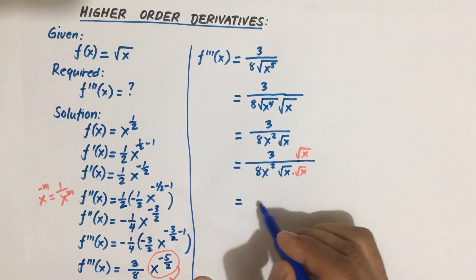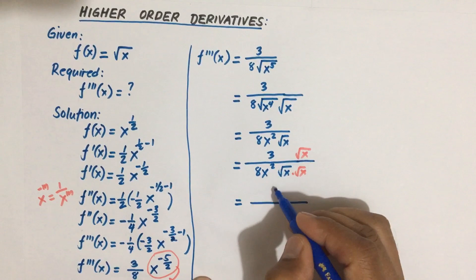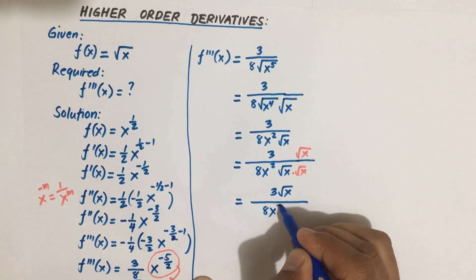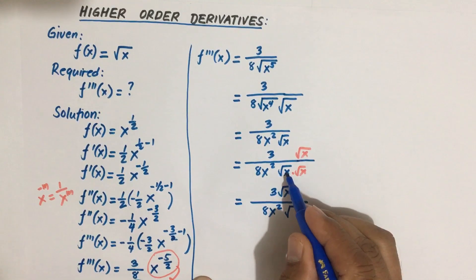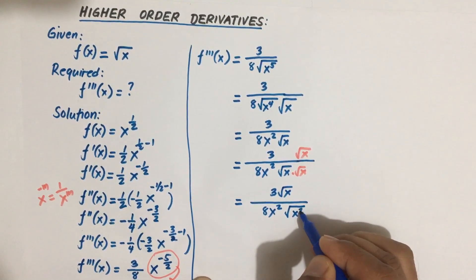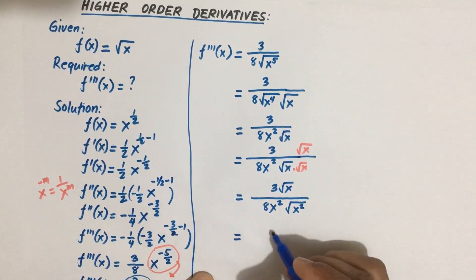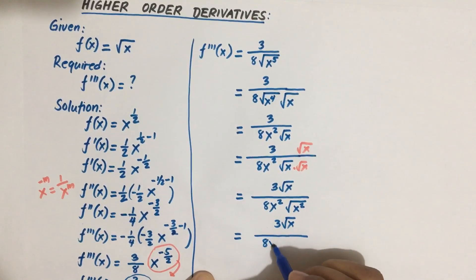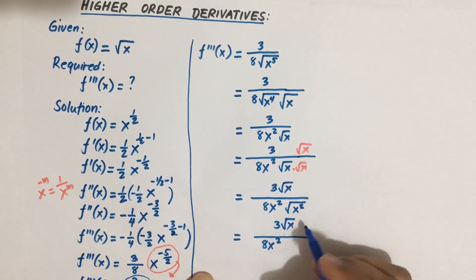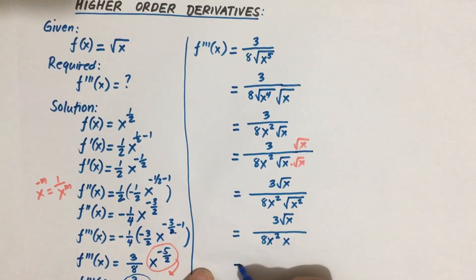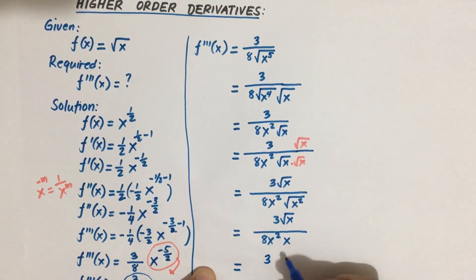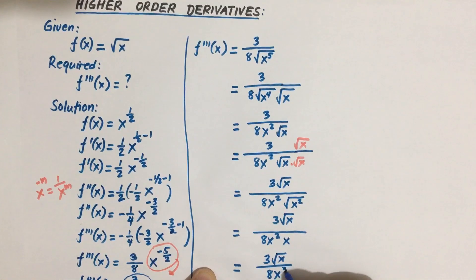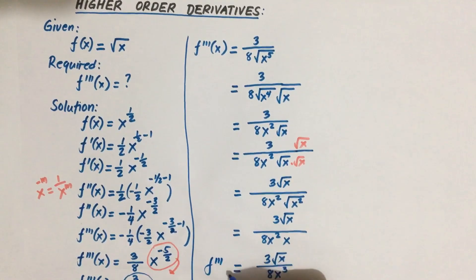We can rationalize by multiplying numerator and denominator by the square root of x. The denominator becomes 8x squared times square root of x times x, which equals 8x squared times the square root of x squared, which equals 8x cubed. The numerator becomes 3 times the square root of x. So the final answer is f triple prime of x equals 3 times square root of x divided by 8x cubed.